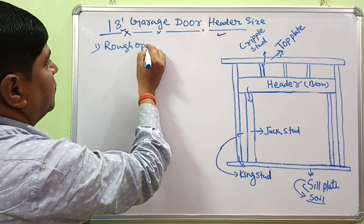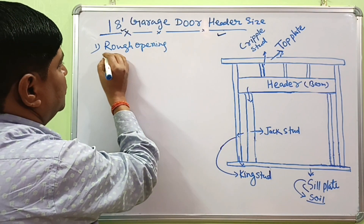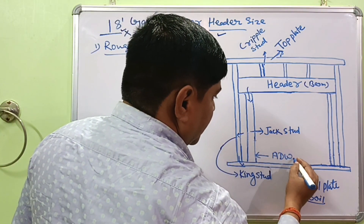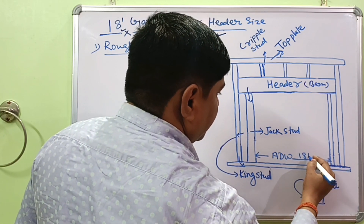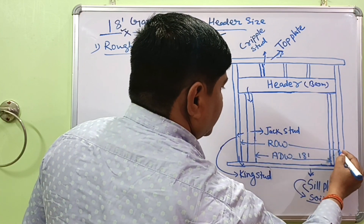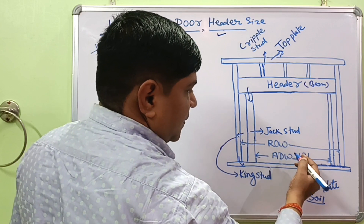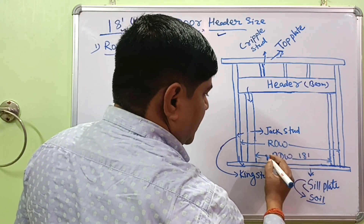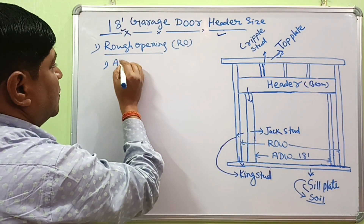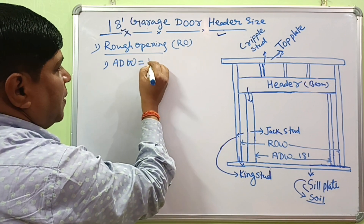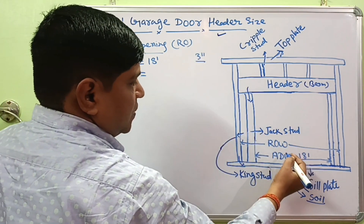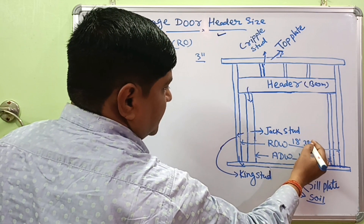First, we find the rough opening for installation of an 18-foot garage door. The actual door opening is 18 feet. The rough opening width will be actual door width plus the door jamb width. The rough opening width will be about 3 inches more than the actual door width, so the rough opening width is 18 feet 3 inches.